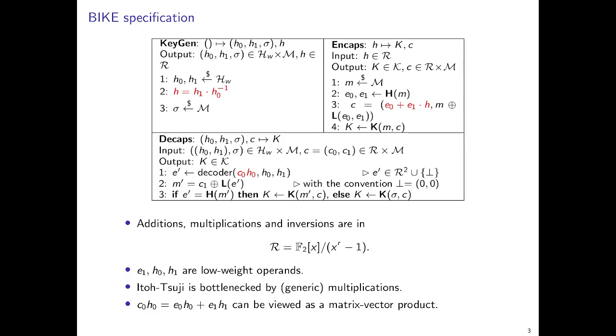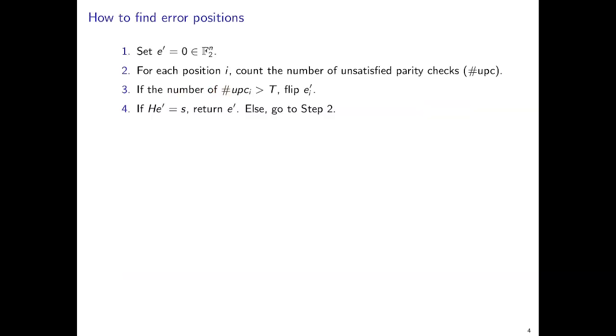And you might wonder why this BIKE code-based scheme doesn't look code-based. In fact, s0 here is a syndrome, which means that it's a product of a parity-check matrix and an error vector. And the parity-check matrix is a low-weight matrix. And just by using the low-weight structure, we can already find the error positions. Well, at least with certain probability.